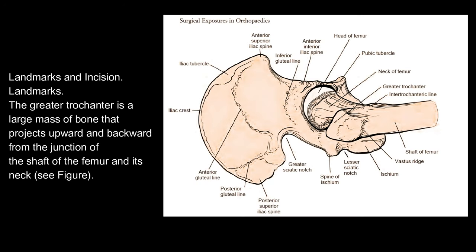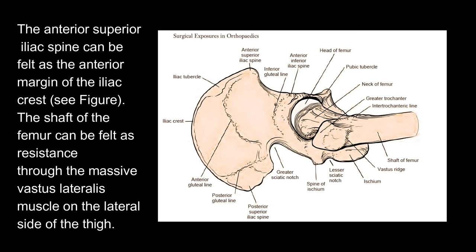Landmarks and incision. The greater trochanter is a large mass of bone that projects upward and backward from the junction of the shaft of the femur and its neck. The anterior superior iliac spine can be felt as the anterior margin of the iliac crest. The shaft of the femur can be felt as resistance through the massive vastus lateralis muscle on the lateral side of the thigh.